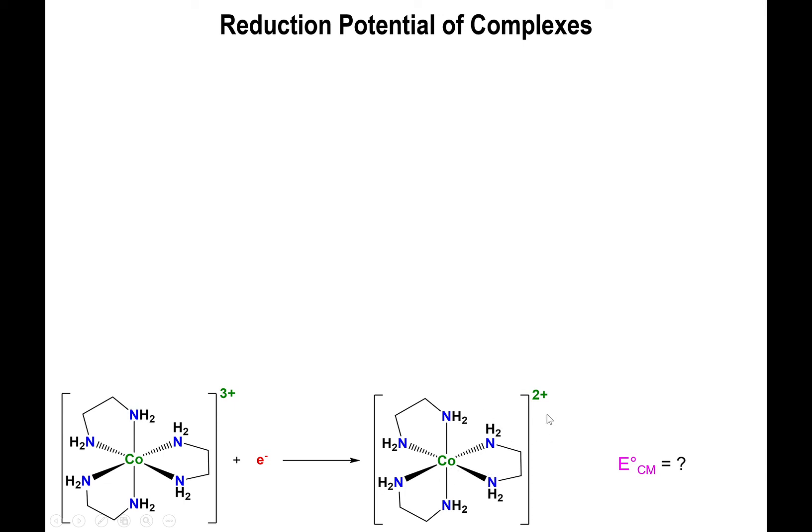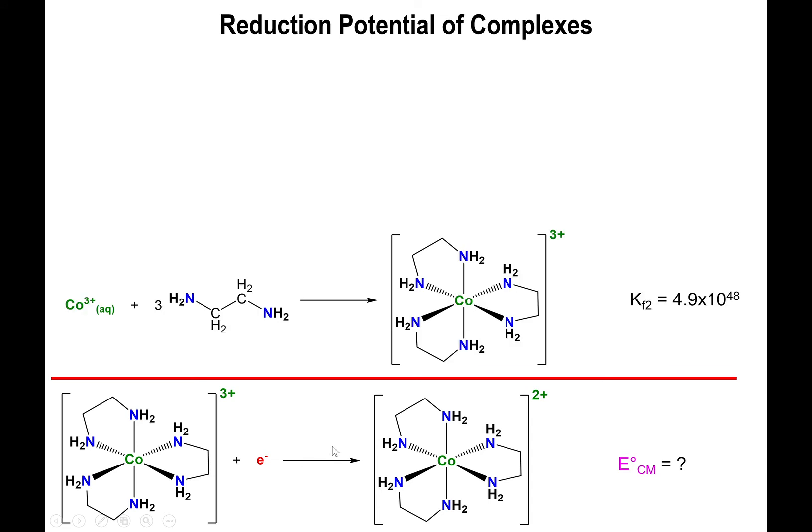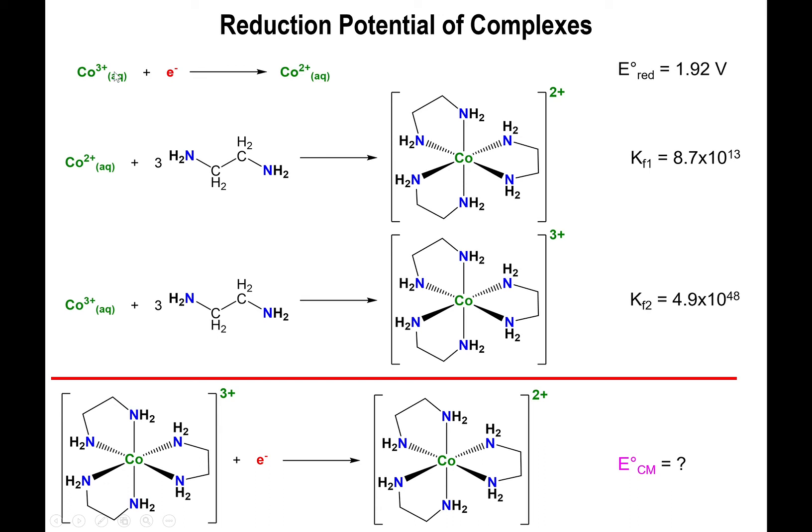Well, what this means is that we have a reduction happening, specifically cobalt 3+ is turning into cobalt 2+. So that will be the first equation to keep in mind. The second one has to do with the fact that we're forming the cobalt 3+ complex. So we have a formation constant associated with it. We also have a cobalt 2+ complex. So we'll have a formation constant for that as well.